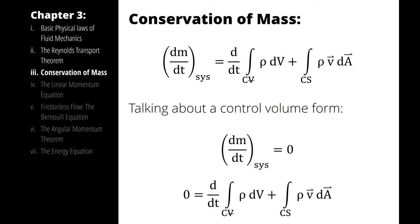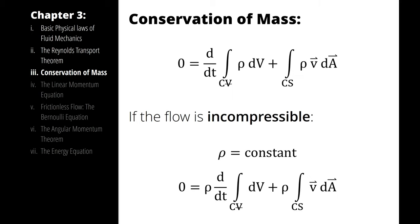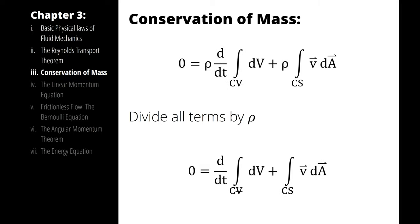Furthermore, if I have incompressible flow where the density doesn't change, I can write density out front of all my integrals by pulling it out, and by dividing all three terms by density, I have 0 equals the time rate of change of the integral of volume, plus the integral across the control surface of velocity with respect to area.